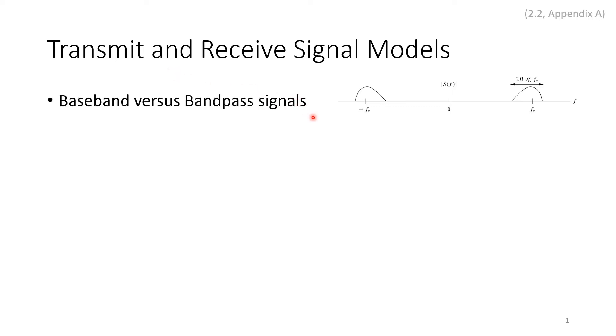Baseband versus passband signals. Baseband signals exist in their original frequency very close to zero hertz, while bandpass signals are modulated and shifted to a certain band. The diagram shown on the right shows a double-sided spectrum shifted to fc.